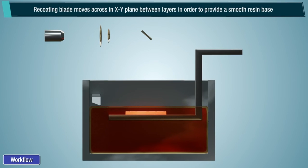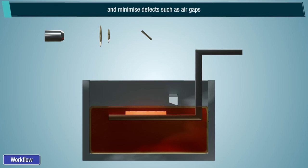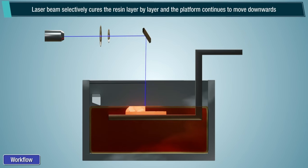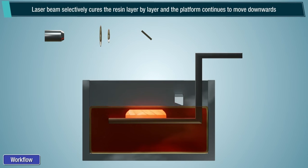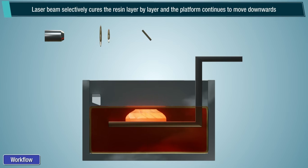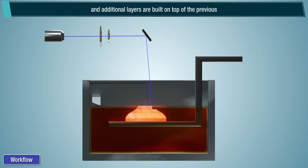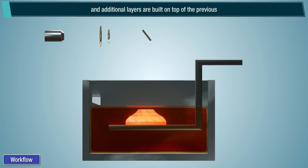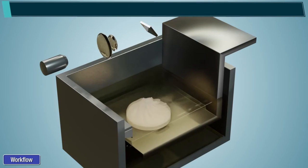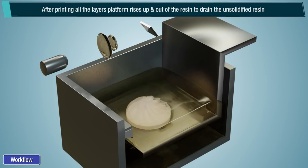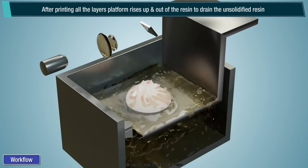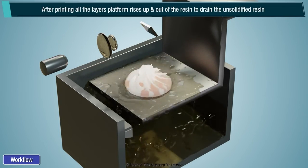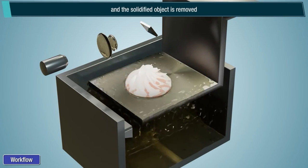The Recoating Blade moves across the XY plane between layers in order to provide a smooth resin base and minimize defects such as air gaps. The laser beam selectively cures the resin layer by layer, and the platform continues to move downwards as additional layers are built on top of the previous. After printing all the layers, the platform rises up and out of the resin to drain the unsolidified resin and the solidified object is removed.